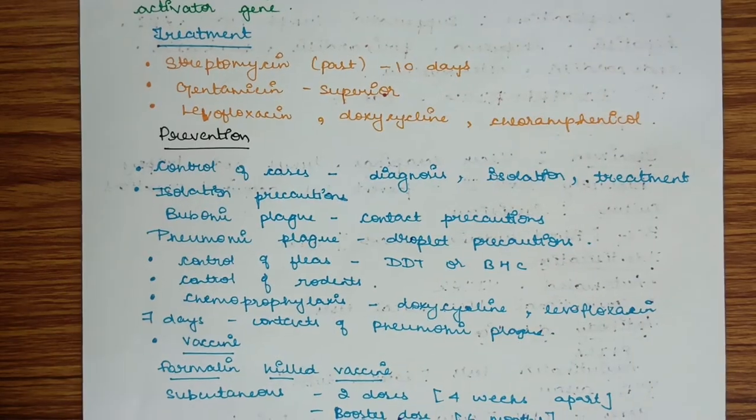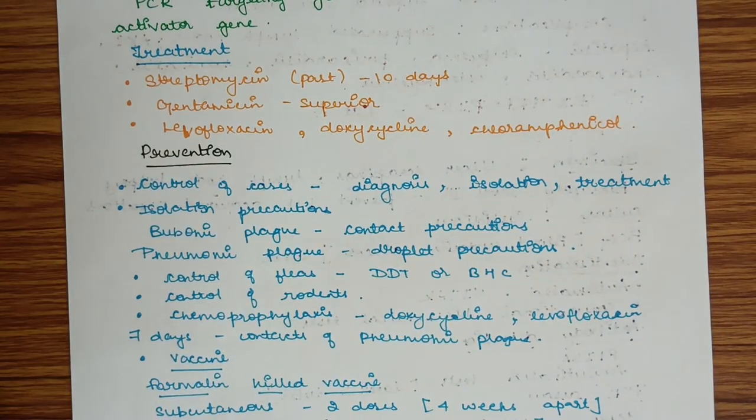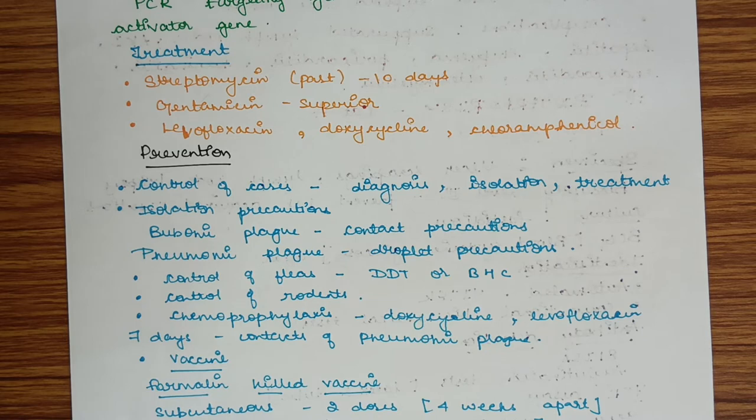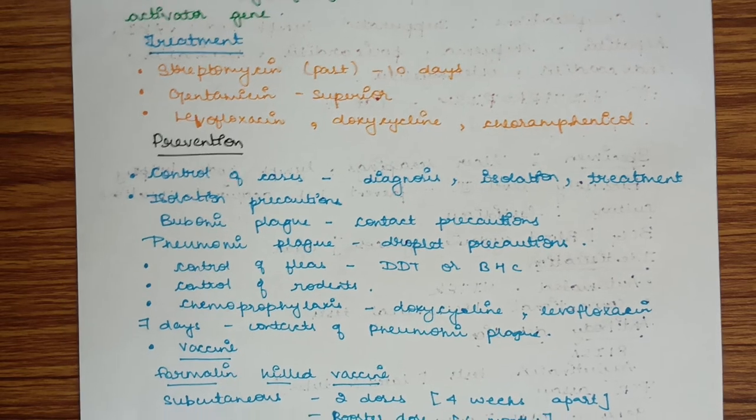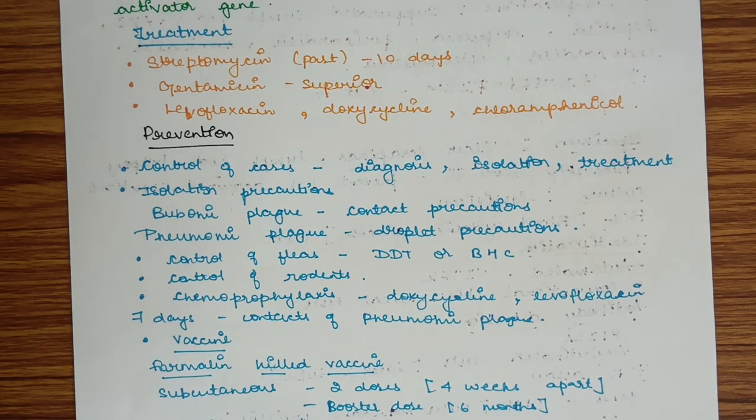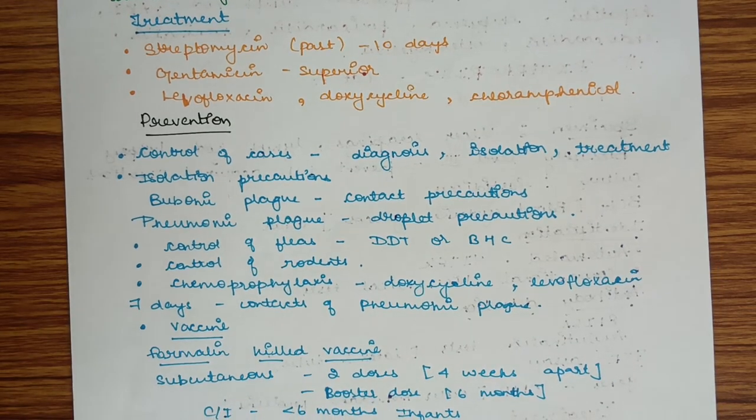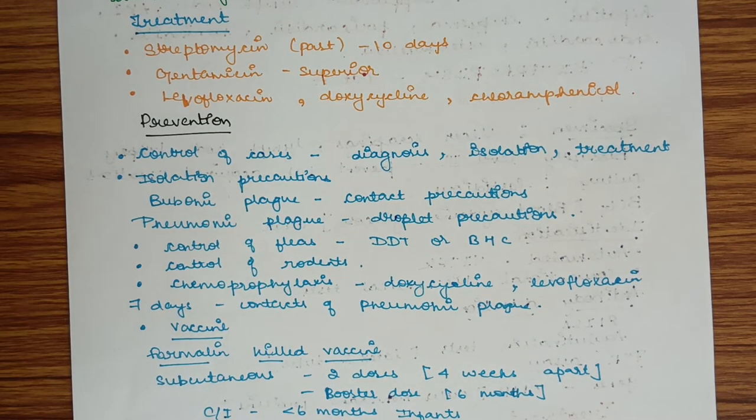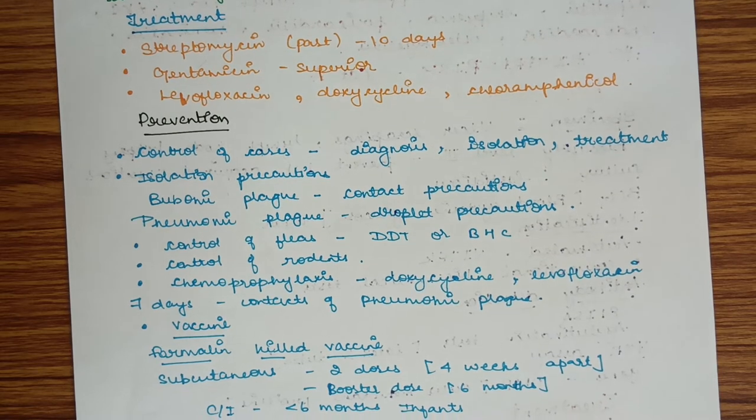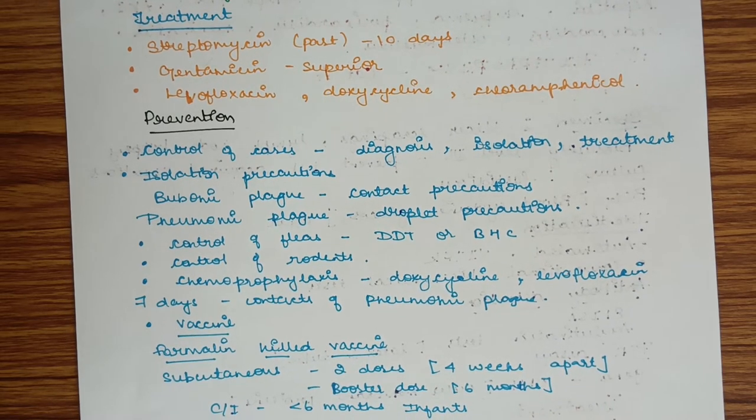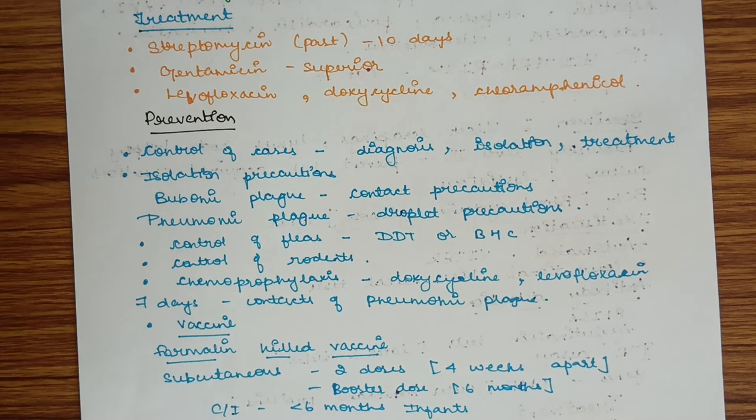Prevention is by control of cases through diagnosis, isolation, and treatment of known cases. Isolation precautions: in bubonic plague, contact precautions to prevent contact with bubos. In pneumonic plague, droplet precautions as it is transmitted by droplets. Also, control of fleas by DDT or BHC and control of rodents.